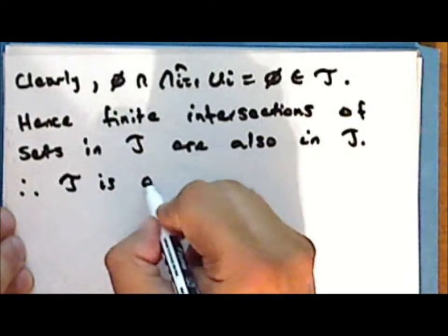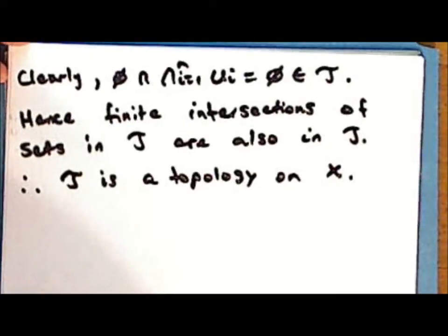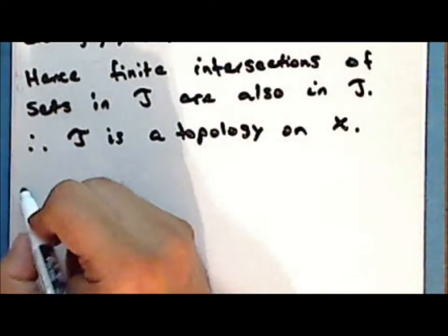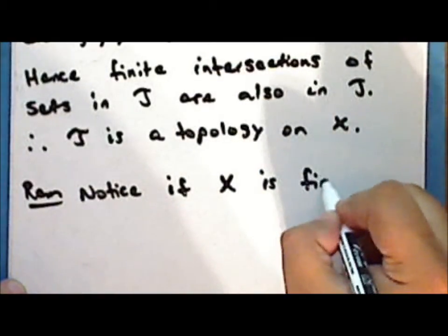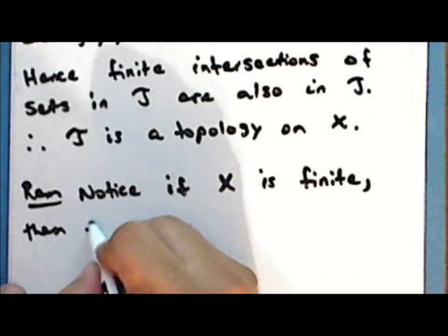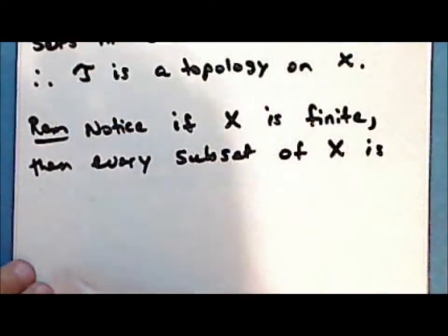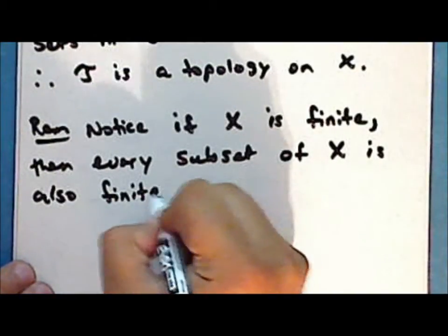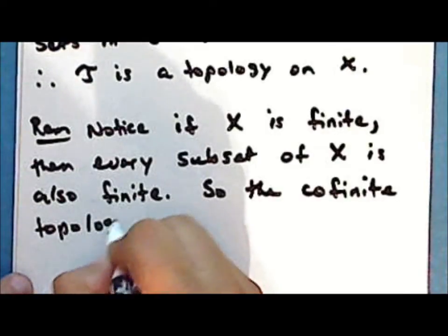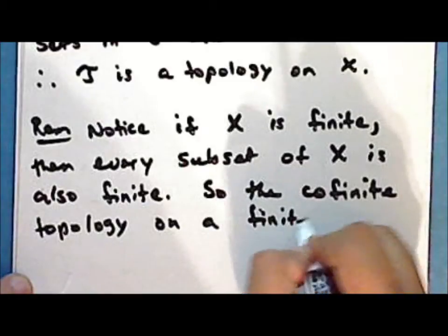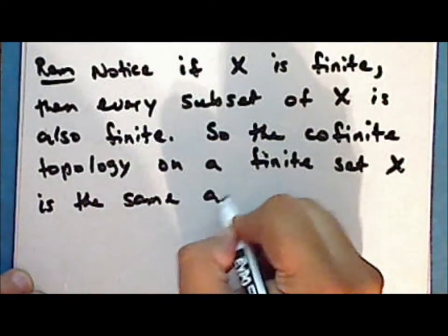Therefore τ is a topology on X, called the co-finite or finite complement topology. Notice that if the underlying set X is finite, then every subset of X is also finite, and so the co-finite topology on a finite set X is the same as the discrete topology.